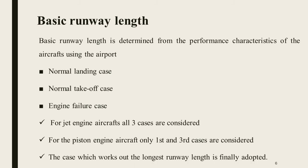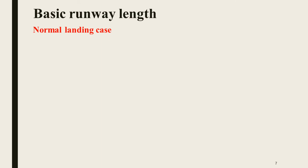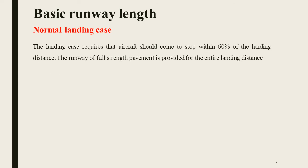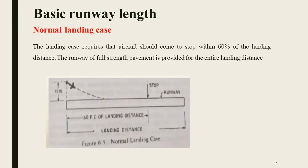For the normal landing case, the aircraft will be stopped such that it comes to a stop within 60% of the landing distance. Runway of full-strength pavement is provided for the entire landing distance.